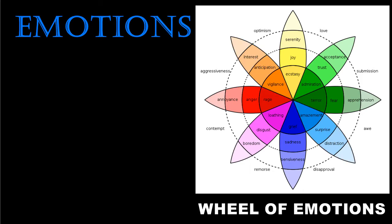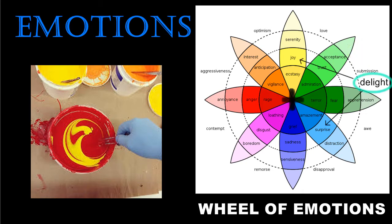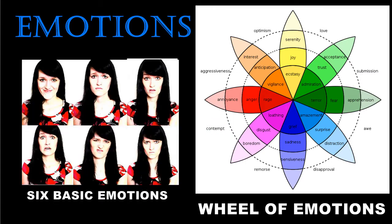According to the Plutchik model, these eight primary emotions can be mixed like paint to produce other secondary emotions — like love, which is a combination of trust and joy; guilt, which is a combination of joy and fear; delight, which combines joy and surprise; or contempt, which combines anger and disgust.